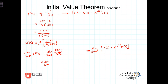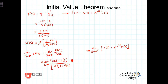Rewrite the limit as s approaches infinity: in the numerator, factor out s, giving 2s·(1 + 1/s); in the denominator, factor out the highest power of s, giving s·(1 + 2/s). The s terms cancel, and as s approaches infinity the terms 1/s and 2/s go to zero, leaving simply 2. This confirms the result from L'Hôpital's rule.